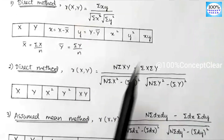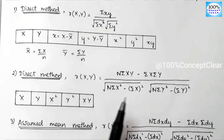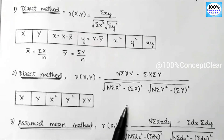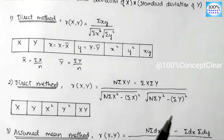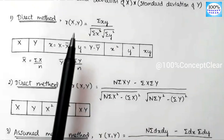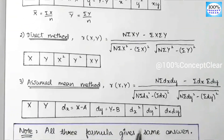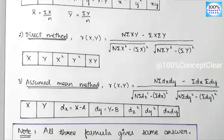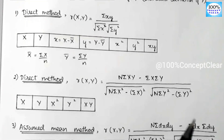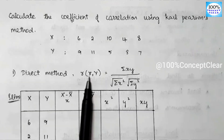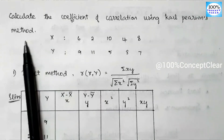If we use any of the three formulas on the same example, the answer will be the same. So let's calculate the coefficient of correlation using Carl Pearson's method. We will apply all three formulas to the same sum and verify that the answer is identical.